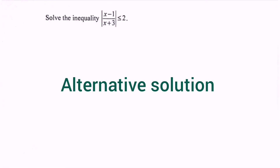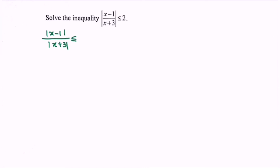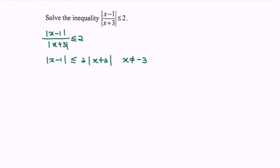My suggestion is to simplify the situation where we have the modulus of x minus 1 over the modulus of x plus 3, less than or equals to 2. Cross multiply by the modulus of x plus 3: modulus of x minus 1 less than or equals to 2 multiplied with x plus 3, with the restriction that x cannot equal negative 3, because originally x plus 3 is in the denominator. We can cross multiply the modulus of x plus 3 because when we have the modulus, the situation is always positive.